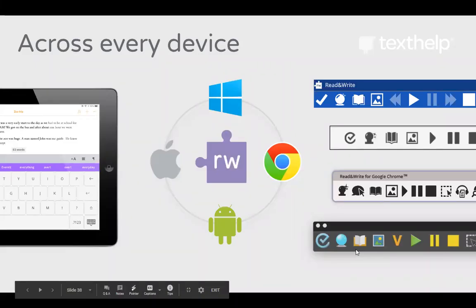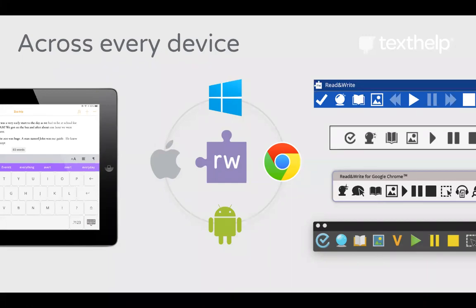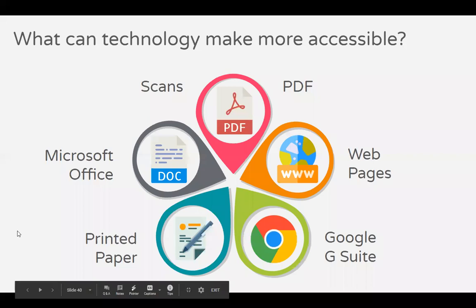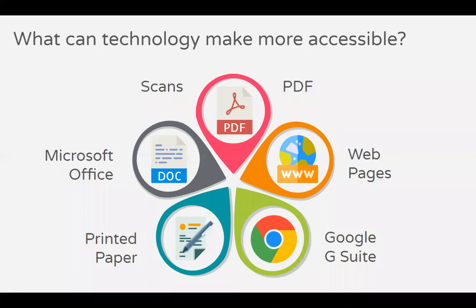We know the way individuals work is different, which is why we at Texthelp have developed support across a range of platforms and devices, including Microsoft, Google and Apple and Android tablets — so no matter what platform you use, you get exactly the same support tools. Our tools are also designed to help in four main areas: literacy, productivity, reporting and collaboration. In the workplace today, there are so many systems and tools we use on a daily basis, and Read&Write is designed to work with all of these — whether you have a PDF document to review, a report to write in Google Docs or a briefing document in Microsoft Word.